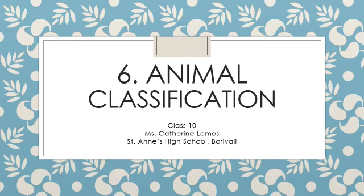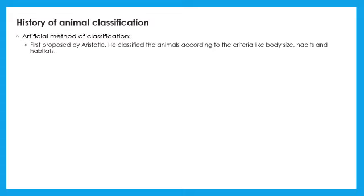Let us look at the history of animal classification. The great philosopher Aristotle proposed the artificial method. He took into account the criteria like body size, habits and habitats. Same method was used by the operators Pliny etc.